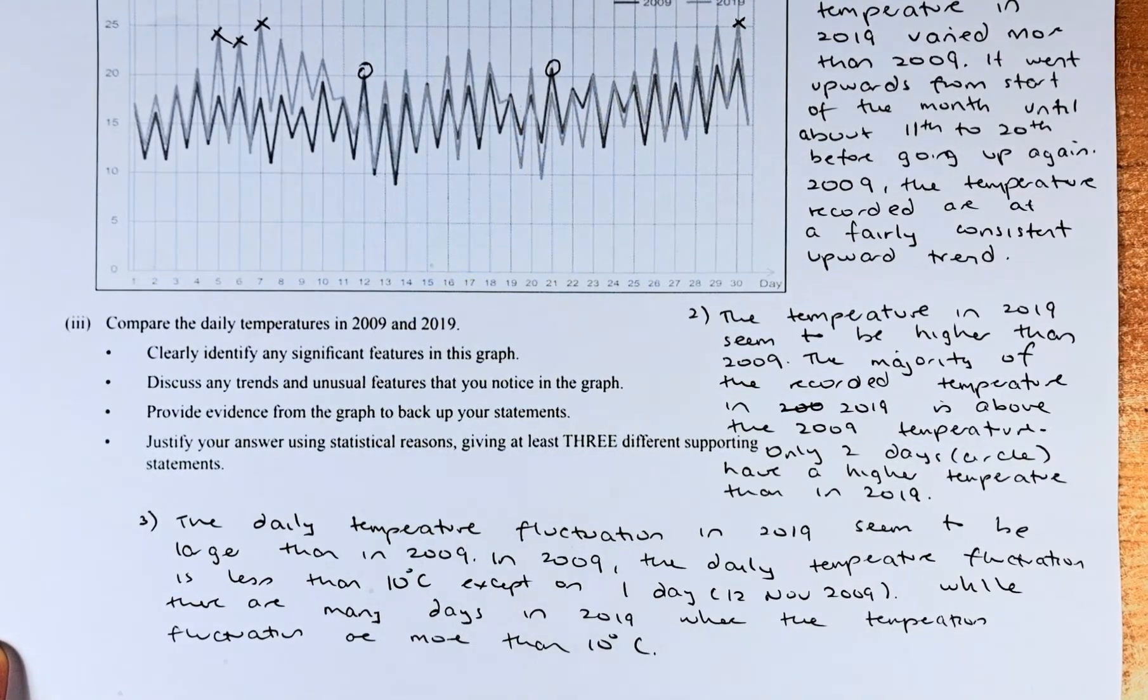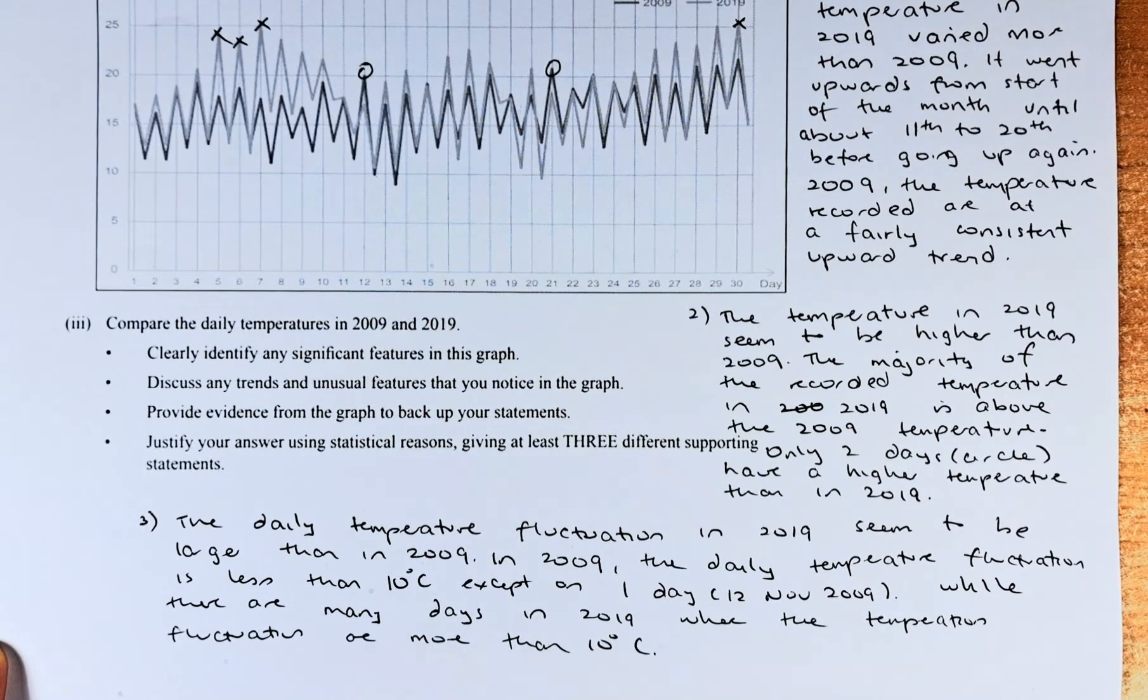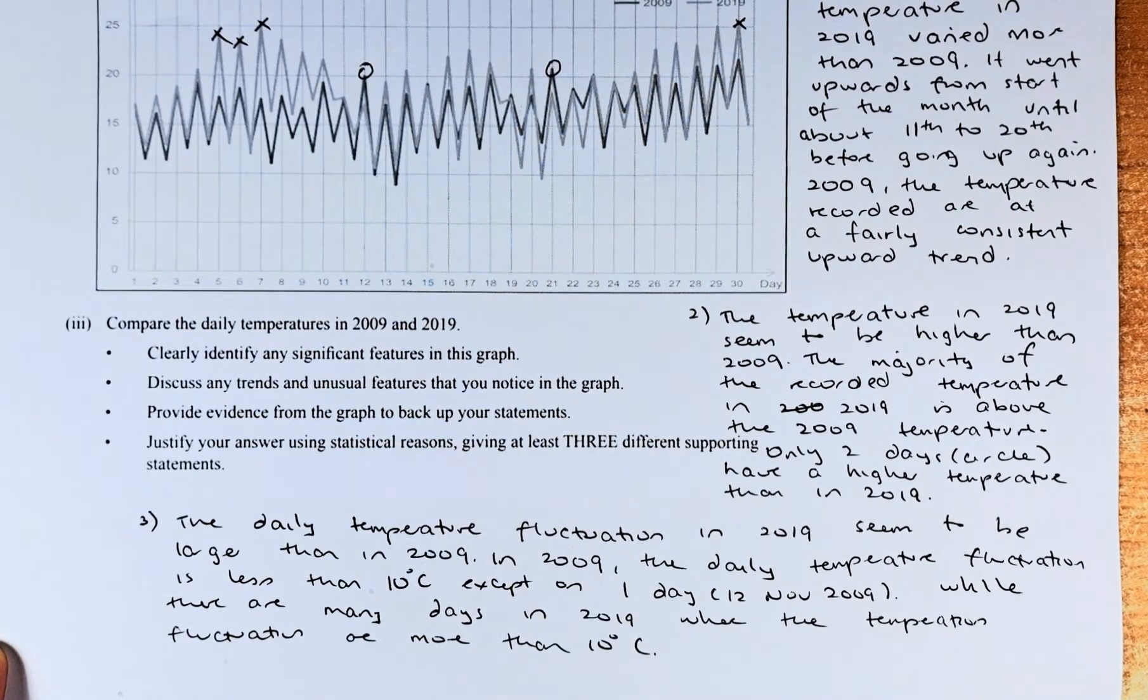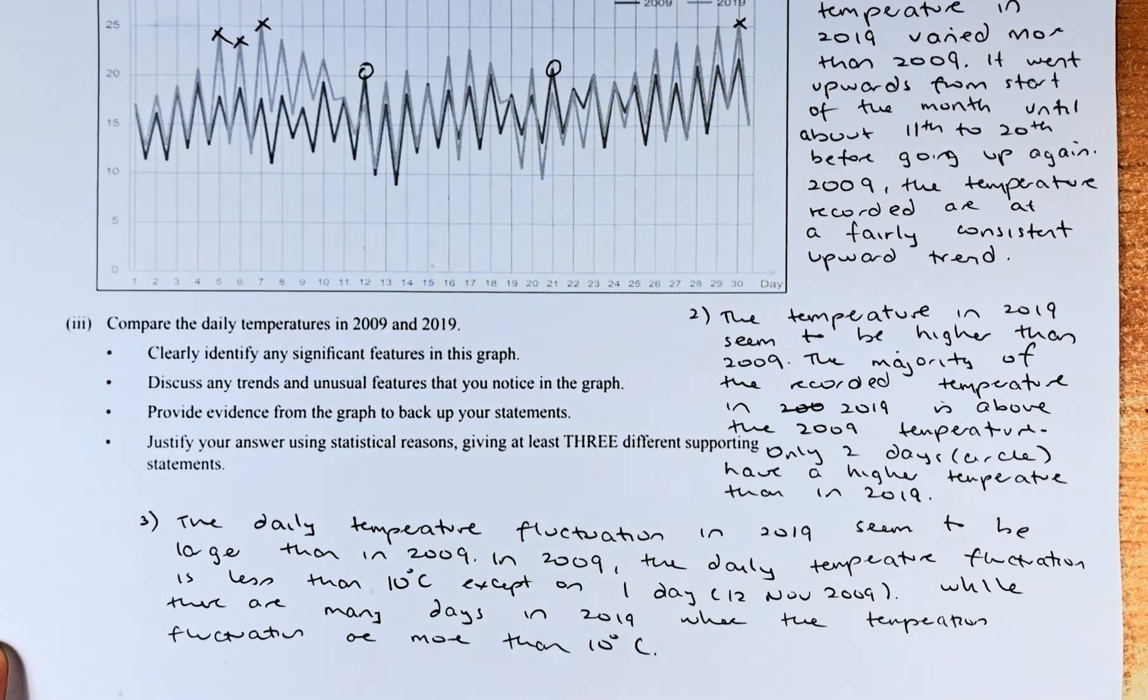So if you can answer 3 valid points, you'll get an excellence. 2, you'll get a merit. And 1, you'll get an achieve. So make sure you write as much as you can, argue your case, justify the graph, and you should do well in this paper.